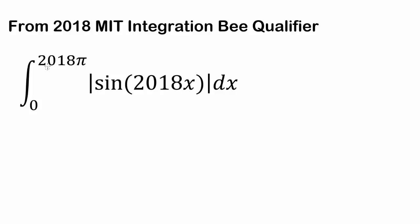Integral from 0 to 2018π of absolute value of sine of 2018x dx. Now you can work with this question with sine of 2018x, but for me, and I'm guessing most of you guys too, I'm more used to working with sine of x than sine of 2018x, so let's just make a u-substitution of u equals 2018x, so our integral becomes a little bit easier to deal with.